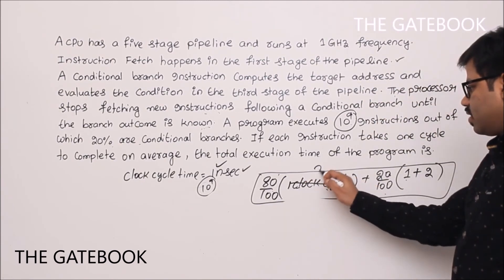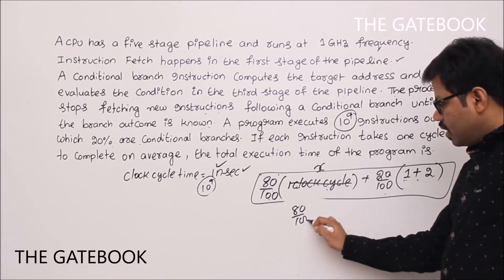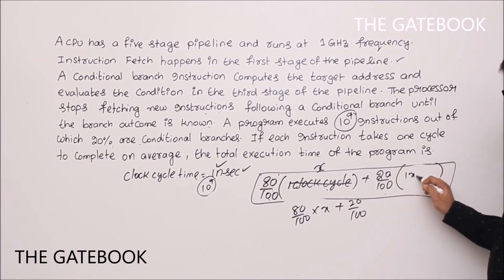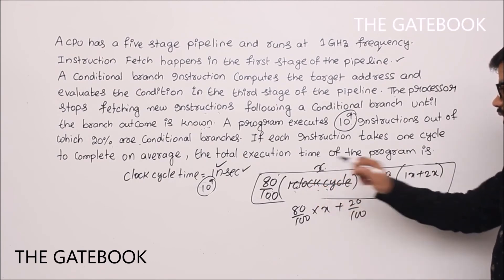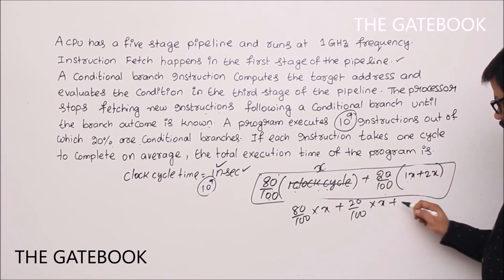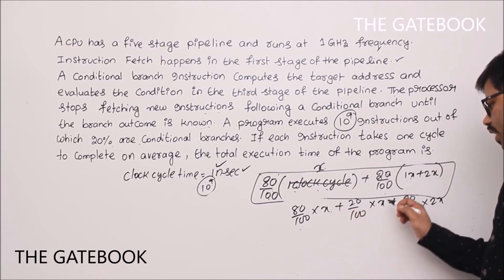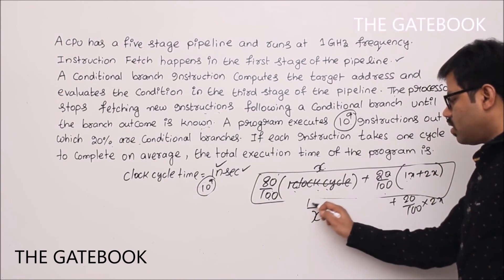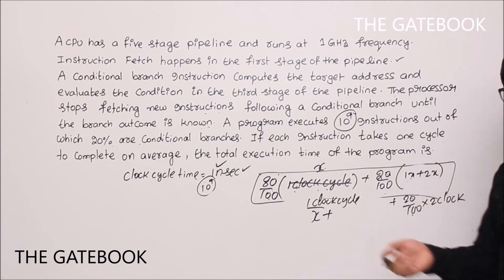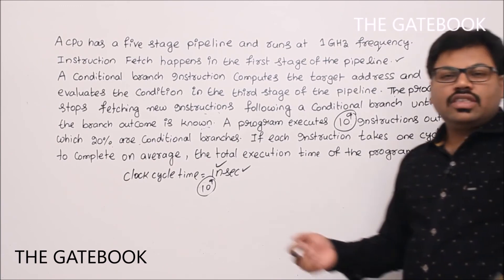To verify algebraically: let one clock cycle = x. Then 80% × x + 20% × 3x = (80/100)x + (20/100)x + (20/100)(2x) = x + 0.2 × 2x = x + 0.4x = 1.4x. Replacing x with one clock cycle confirms the same formula: 1 cycle + 20% of 2 extra cycles = 1.4 cycles.